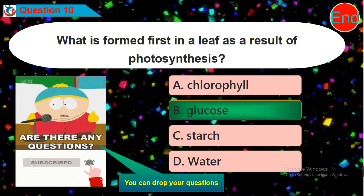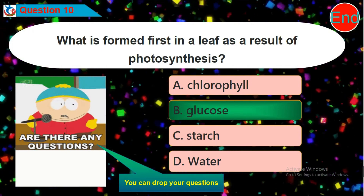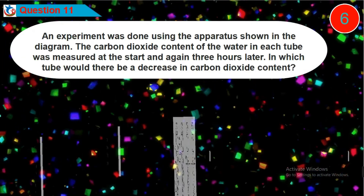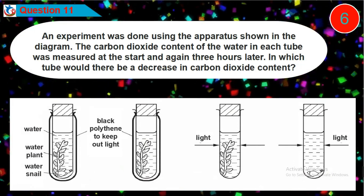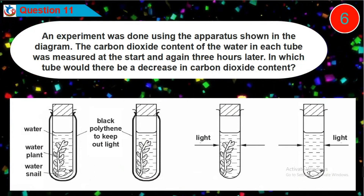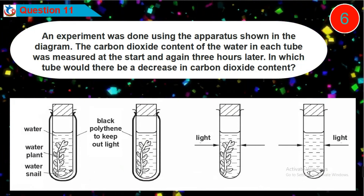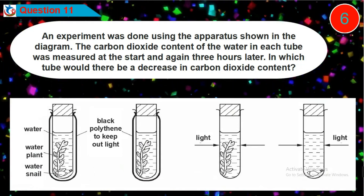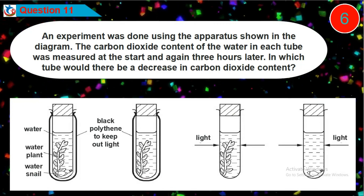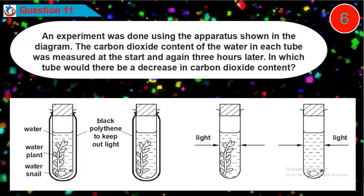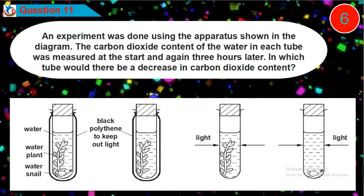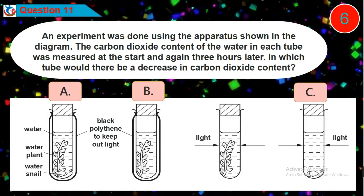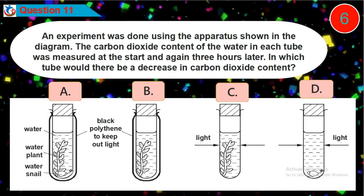Do not forget to drop your comment in the comment section. Question eleven: an experiment was done using the apparatus shown in the diagram. The carbon dioxide content of the water in each tube was measured at the start and again three hours later. In which tube would there be a decrease in carbon dioxide content? Is it option A, B, C, or D?